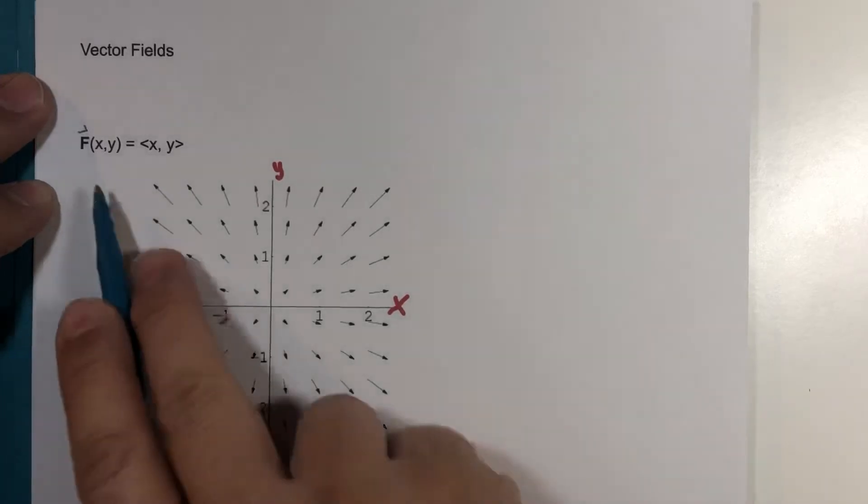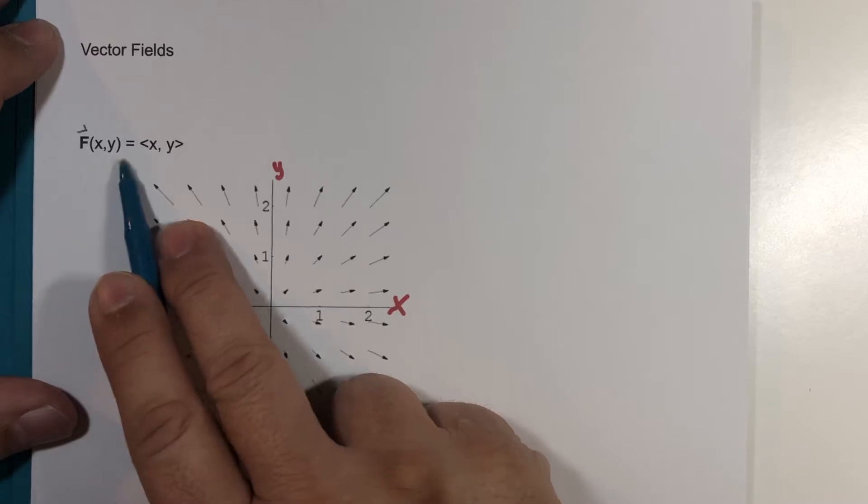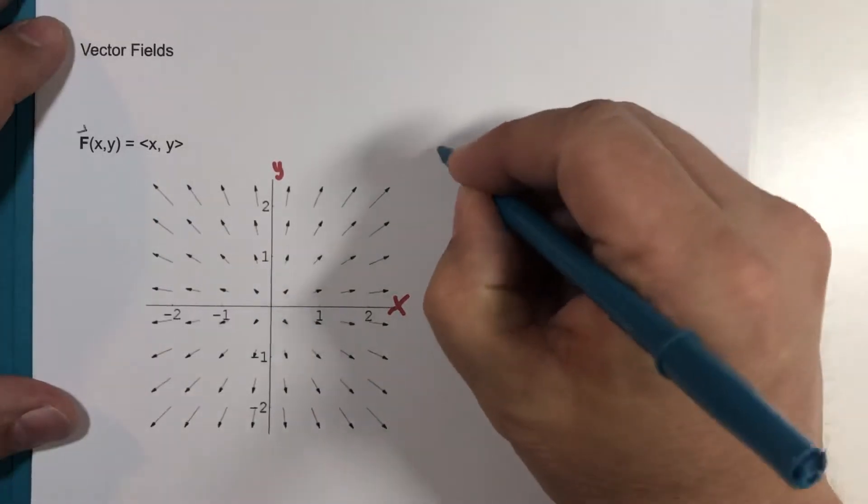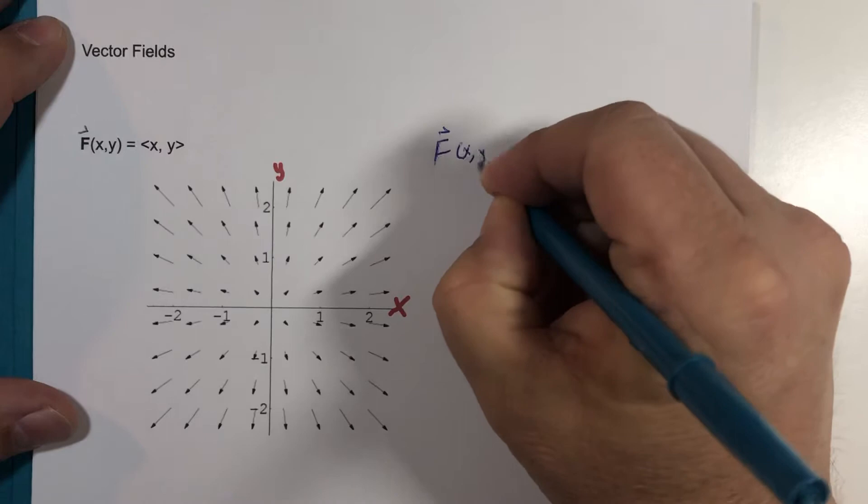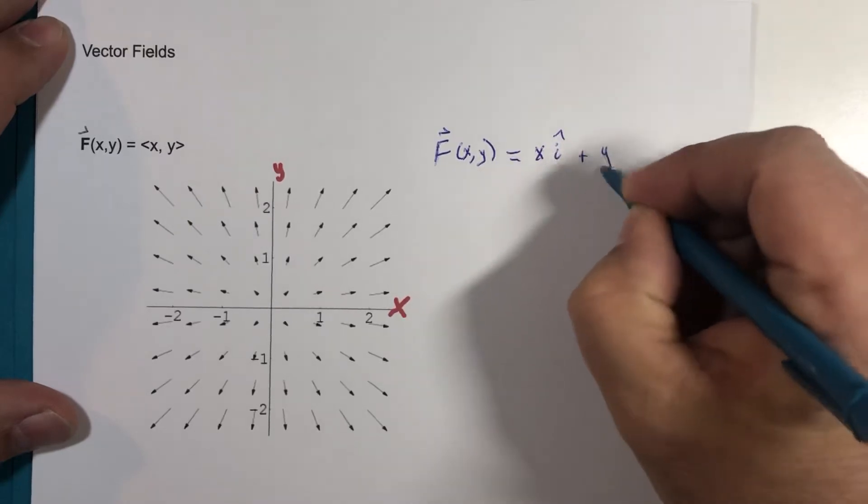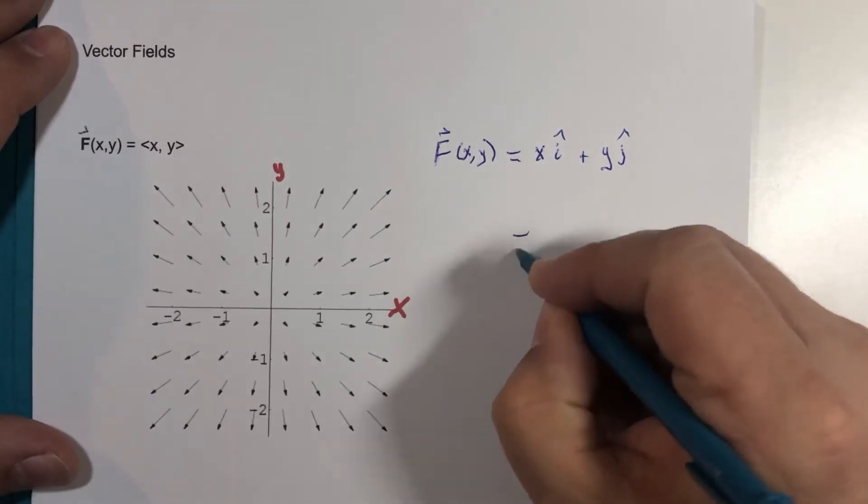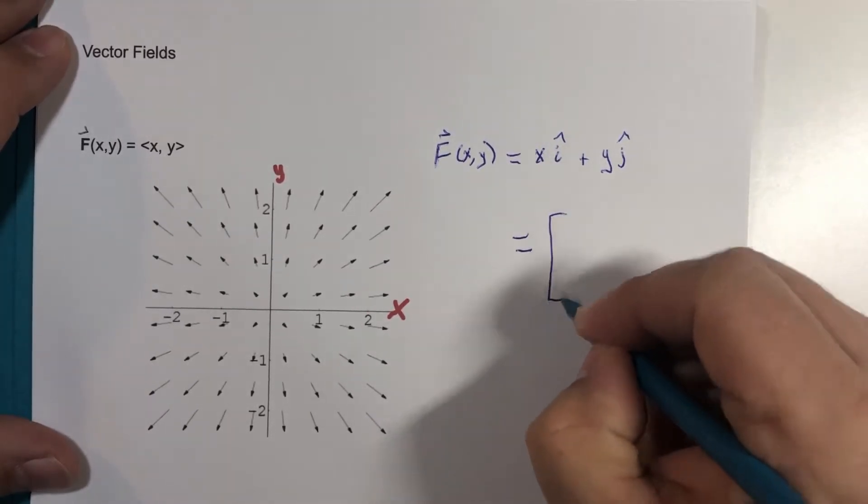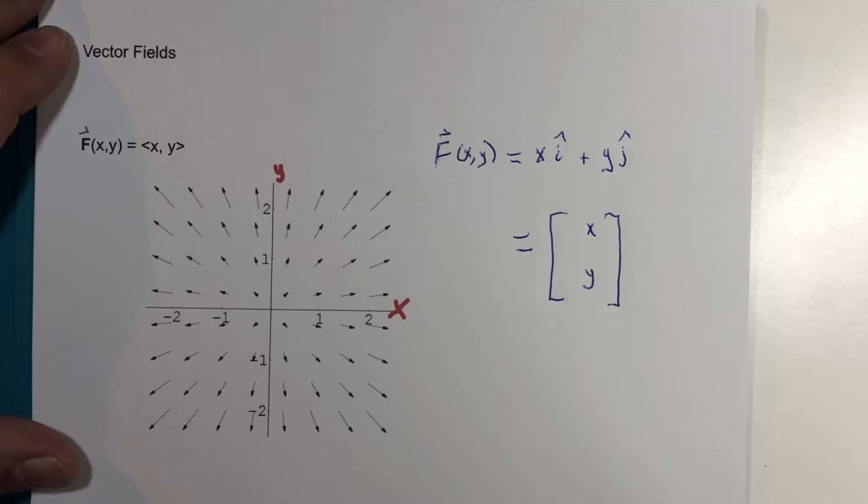So the particular vector field here, capital F vector of two variables X and Y, and then I have it written in component form. You could also write this vector field capital F of X, Y is equal to X times I plus Y times J. If you use the I, J form or notation of vectors more frequently, and if you're sitting in a linear algebra class, you might actually write it this way as a reminder. And depending on the subject involved, the particular notation might become more relevant there.